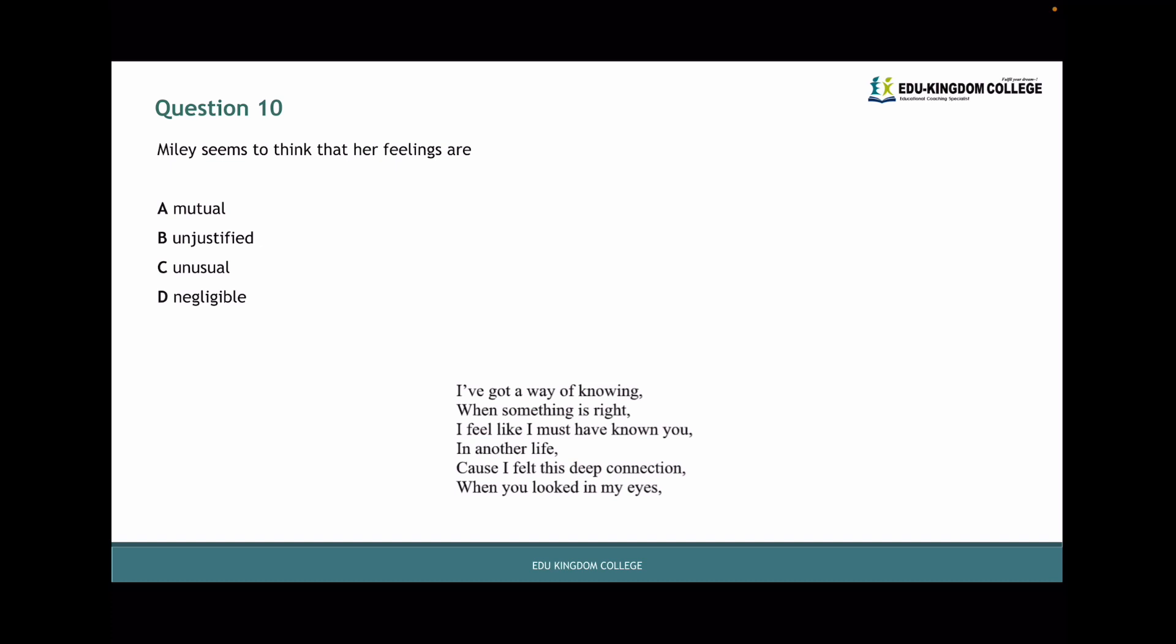And in question ten, Miley seems to think that her feelings are what? I want to look at this extract in particular. I've got a way of thinking, when something is right, I feel like I must have known you in another life, because I felt this deep connection when you looked in my eyes. Quite literally, the image is that they are looking at each other. And Miley Cyrus is just kind of thinking to herself, like, wow, I feel like I already know this person, we have such a deep connection. Because of that, she feels as if it's mutual, she feels like it is on both ends. Because she feels like she's already known him, she feels like the other guy has known her in their previous life. So because they both feel the same, at least in her head, she thinks that it's mutual. So the answer would be A.